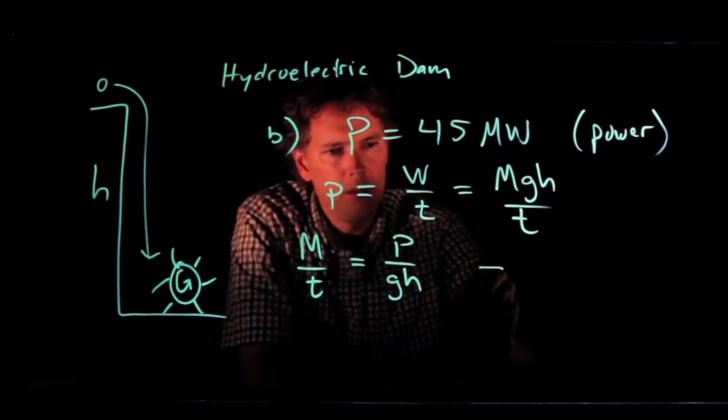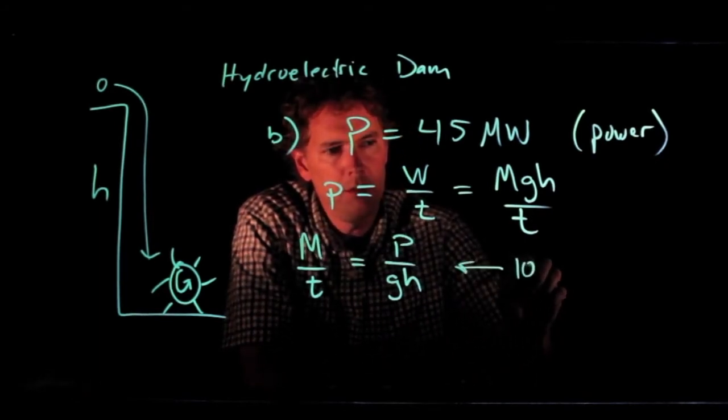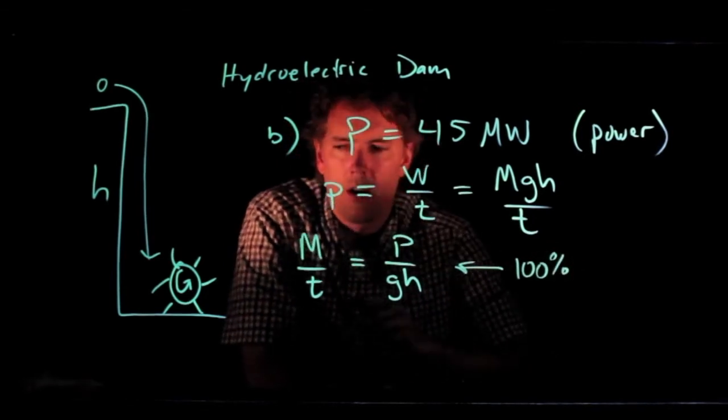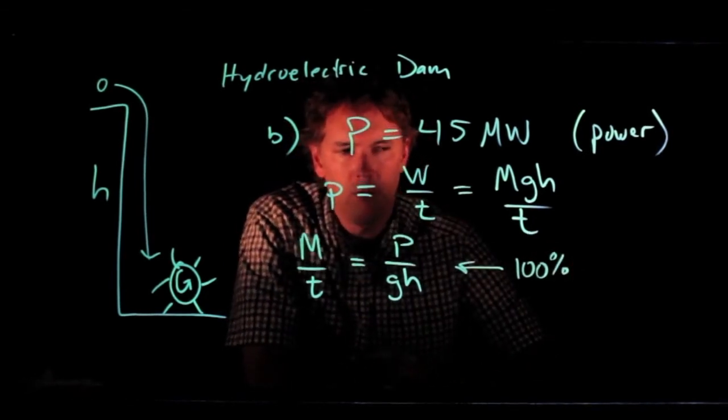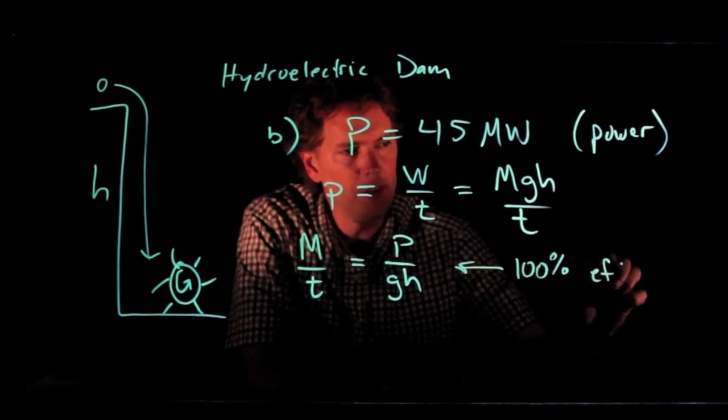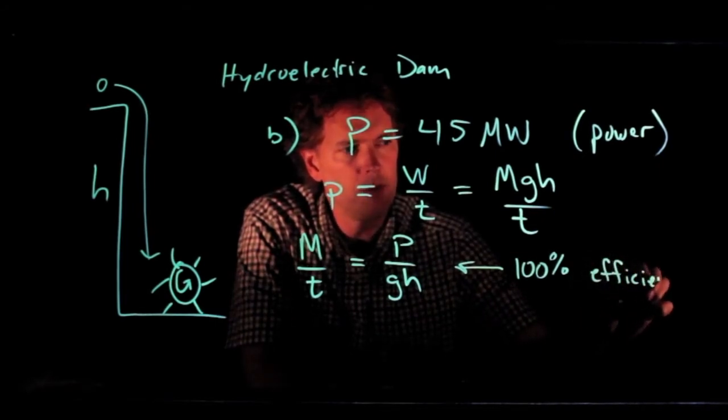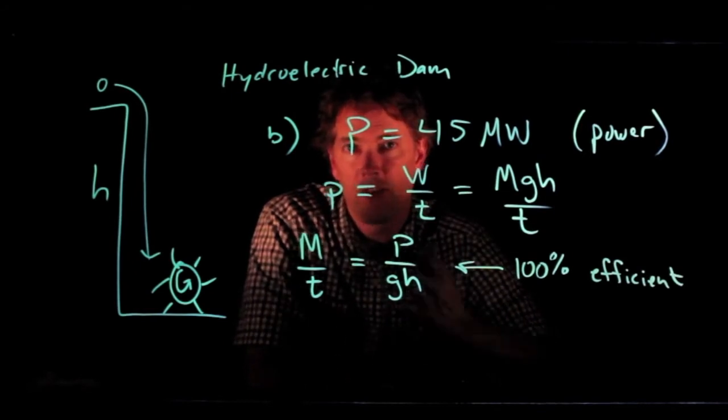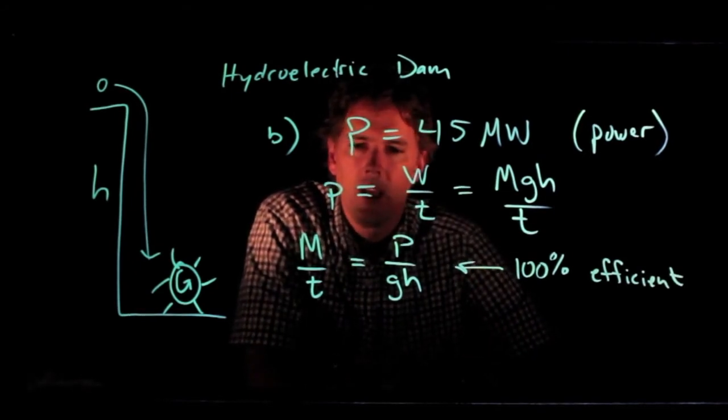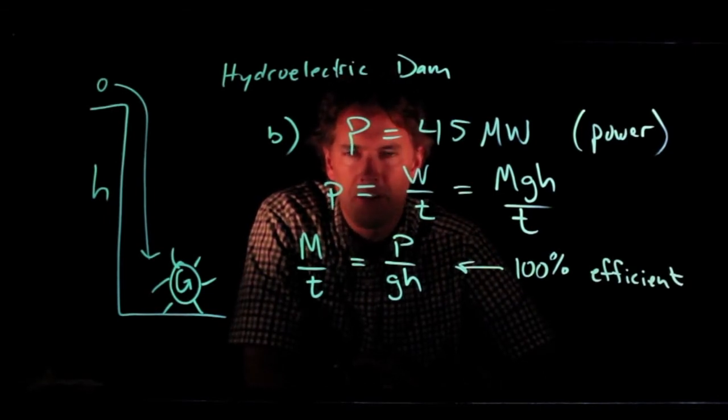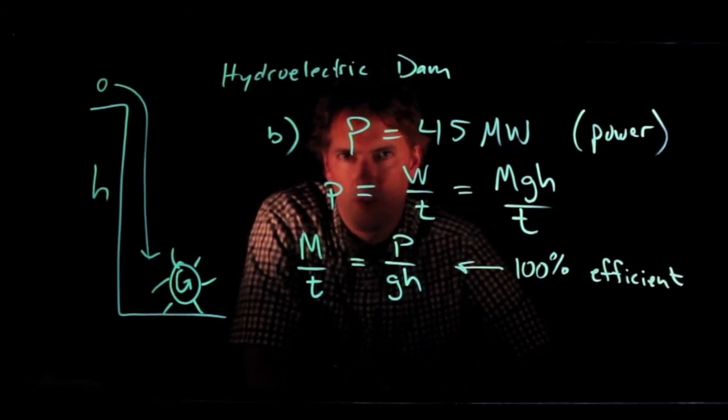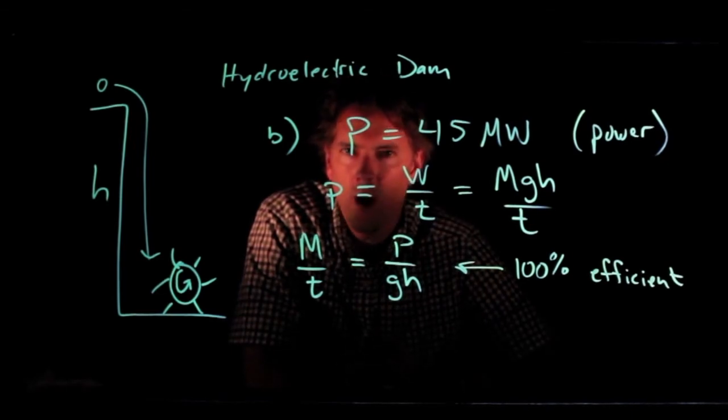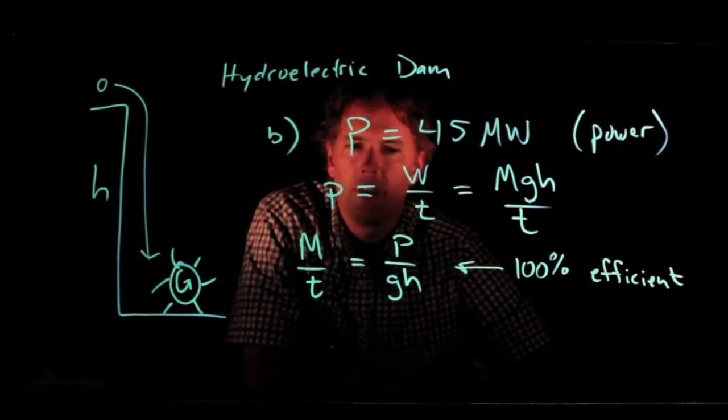The problem is this is assuming that our paddle wheel is 100% efficient. In other words, all the available energy in that falling water gets turned into electricity. And we know that's not the case. No real system is 100% efficient. So we have to include an efficiency factor.